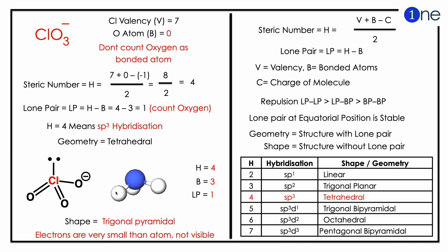The lone pair occupies a corner, but it is not visible to the normal eye because it's very small when compared to the oxygen atom. So the shape of chlorine trioxide anion is trigonal pyramidal.